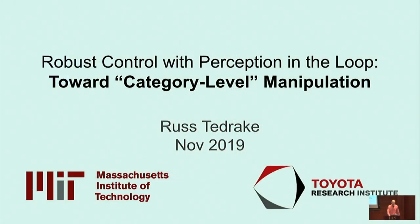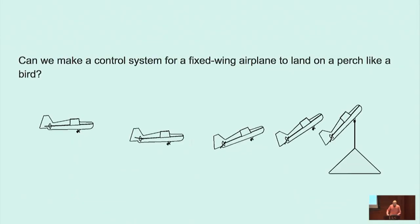I was going to do a call-out to Ani by talking about some of the stuff that we worked on together. Here's a slightly older example for us, of a place — a system and problem that we set up initially thinking that we would need to do RL, but ultimately ended up doing control.